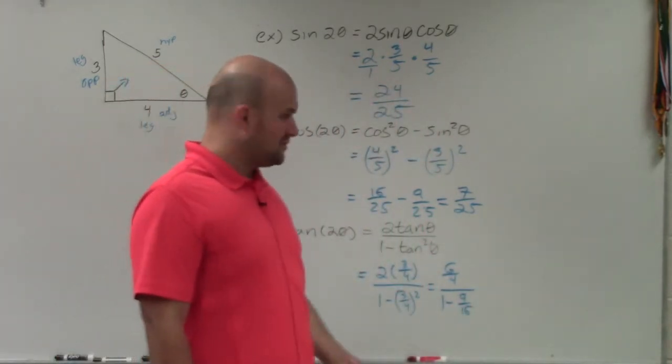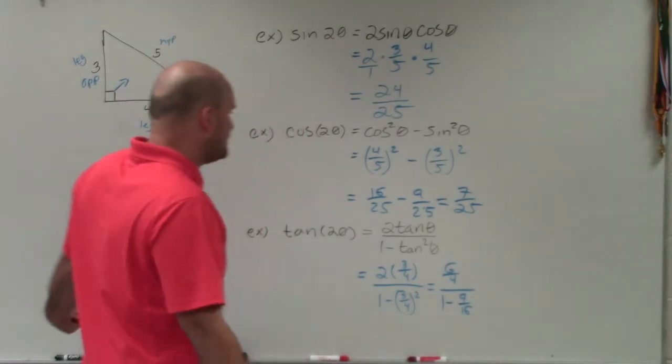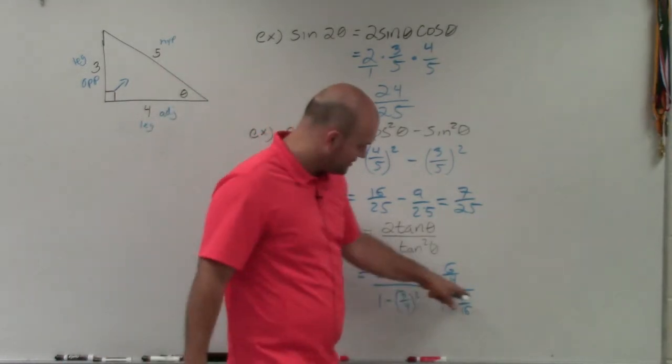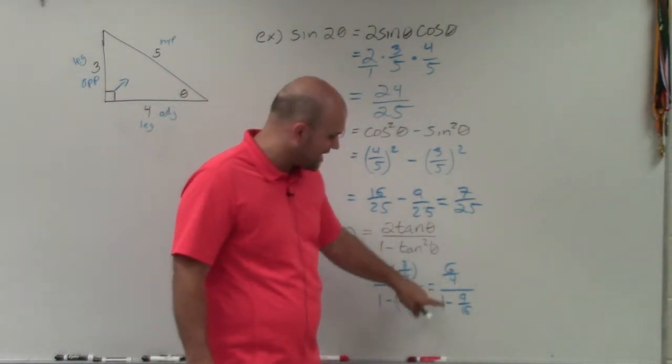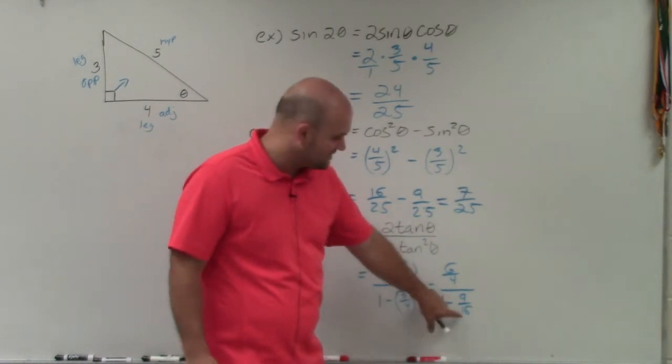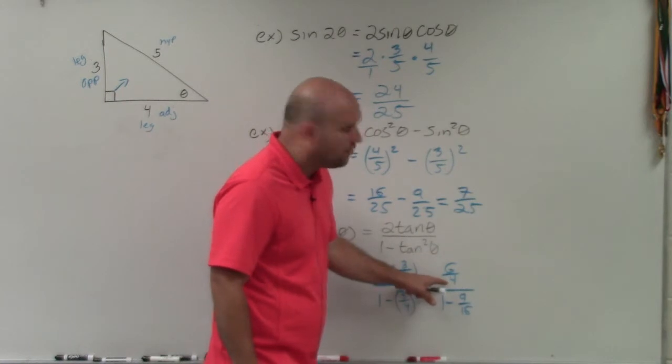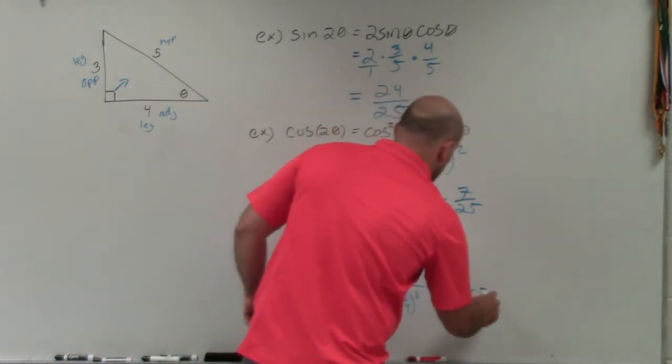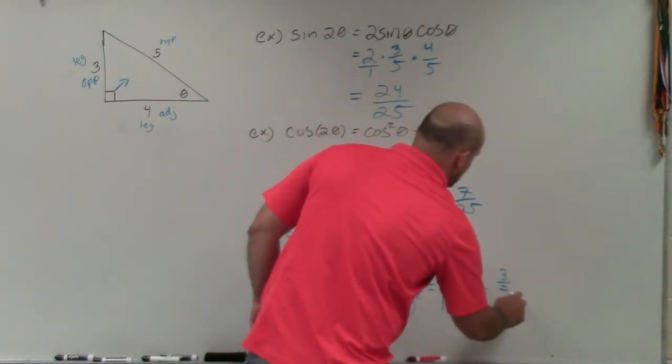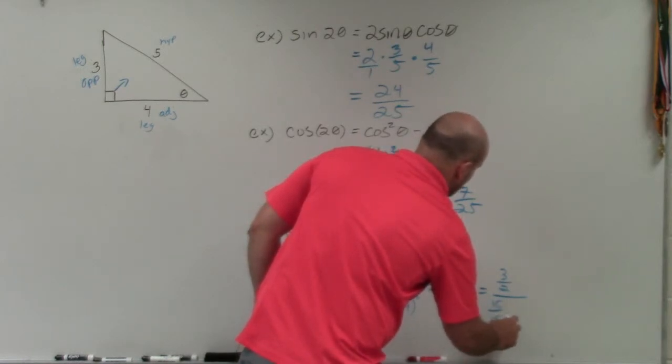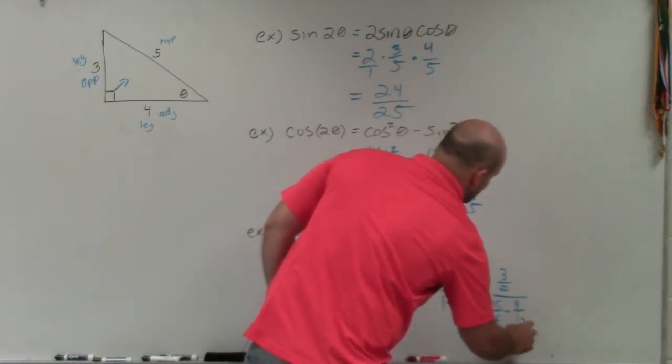And you might be thinking to yourself, OK, so now what do we do? Well, the main important thing here is we're going to want to subtract these. So the best way to subtract them is to rewrite 1 with a denominator of 16. I can also reduce 6 over 4 as 3 halves. So in doing that, I obtain 3 halves divided by 16 over 16 minus 9 over 16.